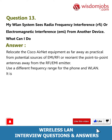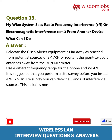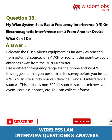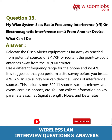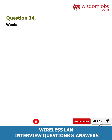It is suggested that you perform a site survey before you install a WLAN. In a site survey, you can detect all kinds of interference sources — this includes non-802.11 sources such as microwave ovens, cordless phones, etc. You can collect information on key parameters such as signal strength, noise, and data rates that exist in the actual deployment scenario. Based on this, WLANs can be planned and deployed accordingly.